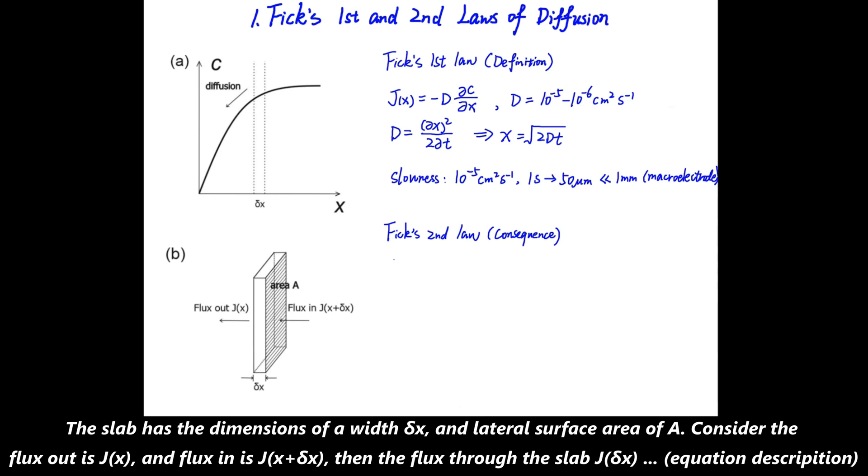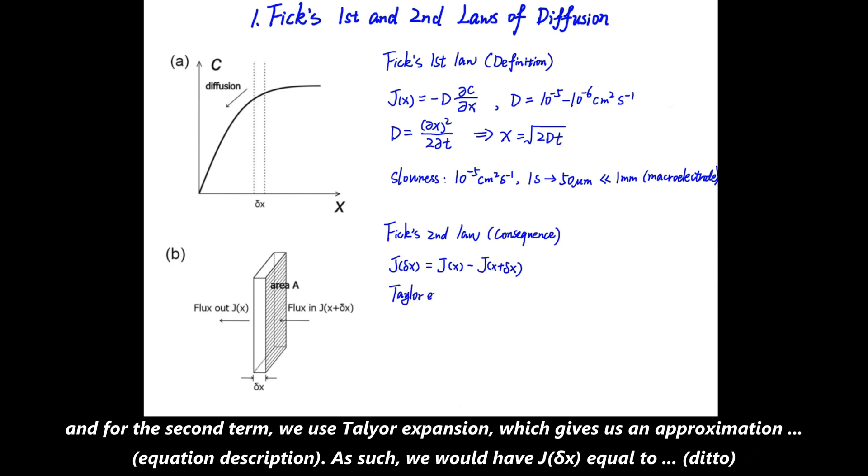The slab has a dimension of a width Δx and the lateral surface area A. And consider the flux out is Jx and flux in is Jx+Δx. Then the net flux through the slab, JΔx = Jx - Jx+Δx. And for the second term, we use Taylor expansion, which gives us an approximation, Jx+Δx ≈ Jx + Δx·∂Jx/∂x.